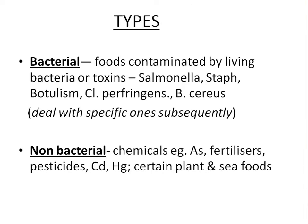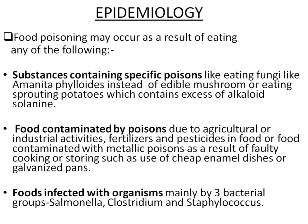Types: there are two types — bacterial and non-bacterial. Non-bacterial contains chemicals like fertilizers, arsenic, pesticides, cadmium, mercury. The bacterial types are Salmonella, Staphylococci, Botulism, Clostridium perfringens, and Bacillus cereus. We will deal with each one of these important ones subsequently.